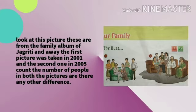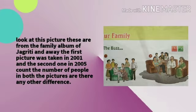Look at this picture. These are from the family album of Jagrati and Abhay. The first picture was taken in 2001 and the second one is from 2005. Count the number of people in both pictures. Are there any differences? How many members are there in the first picture? 1, 2, 3, 4, 5, 6.